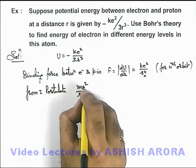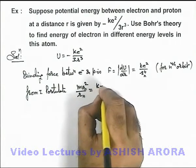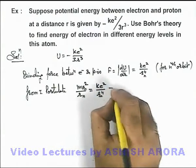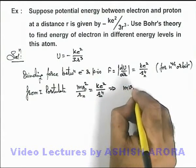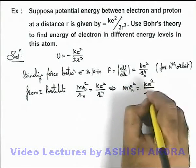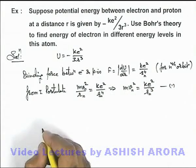That is, for nth orbit we can write m v n square by r n must be equal to the binding force, which is k e square over r n to power 4. This gives us the value of m v n square as k e square by r n cube. This is our first equation from the first postulate.